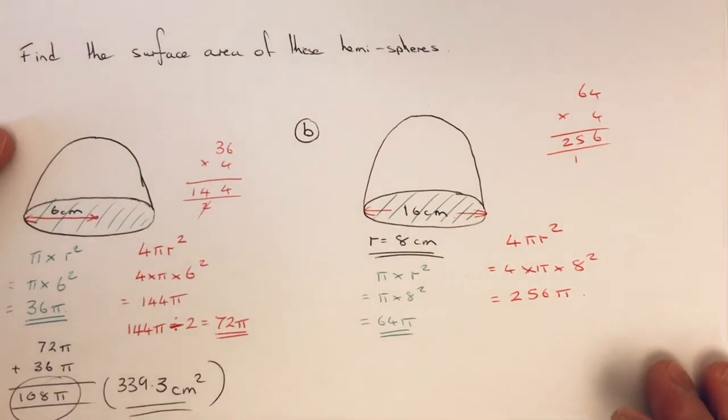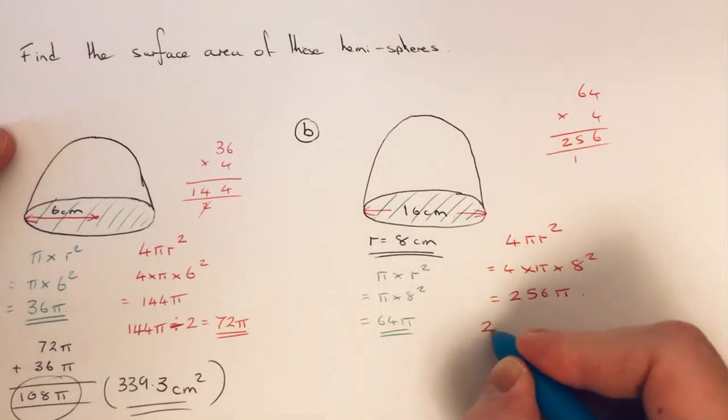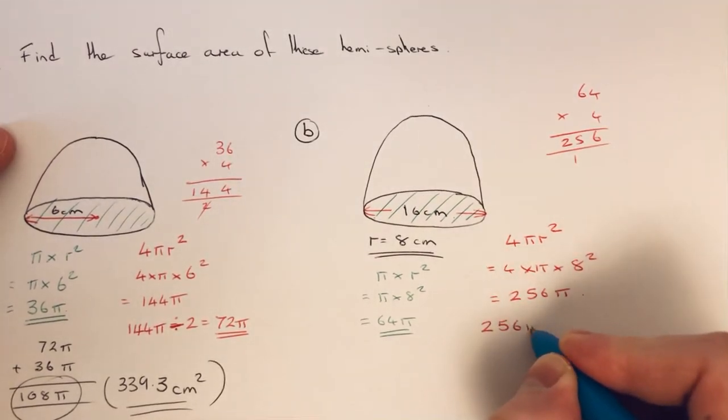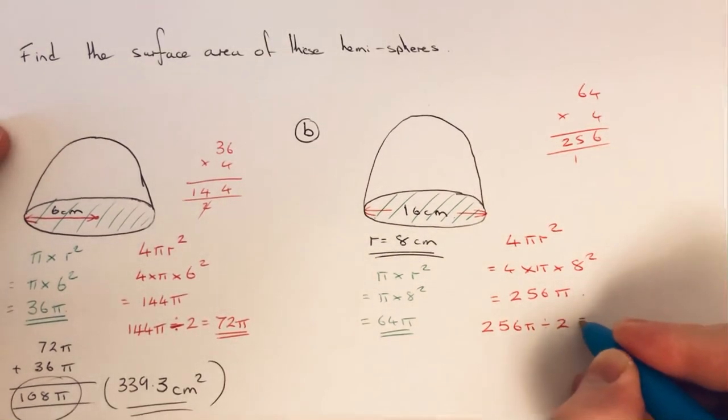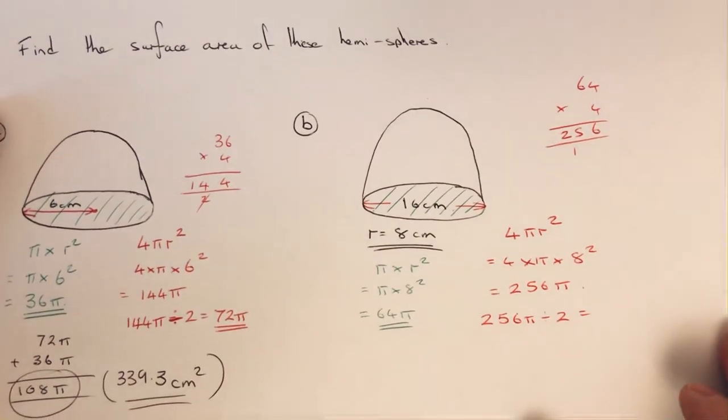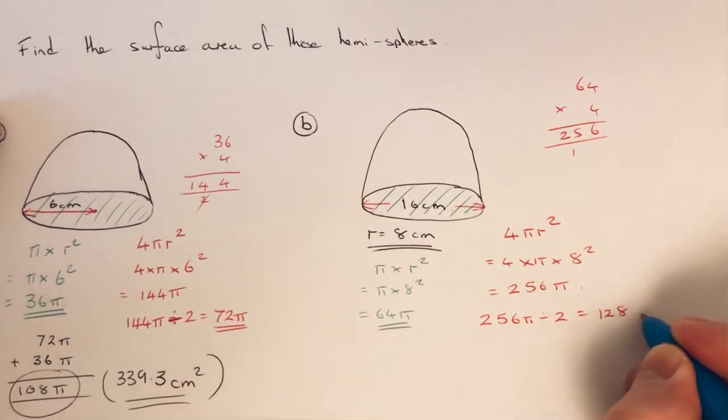And then remember, we need to half this answer, because that is the surface area of the full sphere. So we divide it by 2. And that will give us 128π.